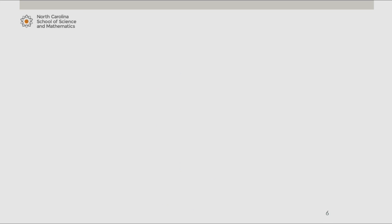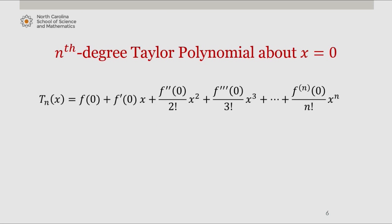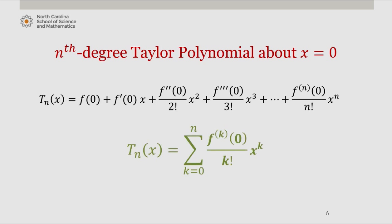So the nth degree Taylor polynomial centered at x equals 0 is as follows. In general form, it is the sum from k equals 0 to n of the kth derivative of f at 0 divided by k factorial times x to the k.